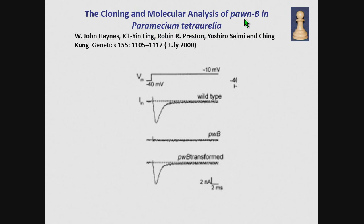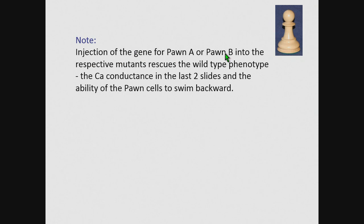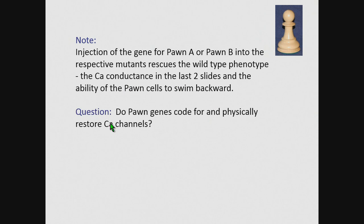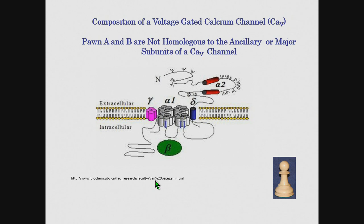It's the same thing with the Poin-B gene, another tour de force of cloning. If you depolarize the cell, the wild-type has an inward calcium current. Poin-B has nothing. But Poin-B transformed with a good Poin-B gene shows you that inward current. Note that the injection of a gene for Poin-A or B into the mutants will restore the wild-type phenotype, which means the calcium conductance and backward swimming. The question, though, is do Poin genes code for and physically restore calcium channels? And the answer is no. The Poin genes for Poin-A and B are too small, and they cannot account for any of the components of a calcium channel.